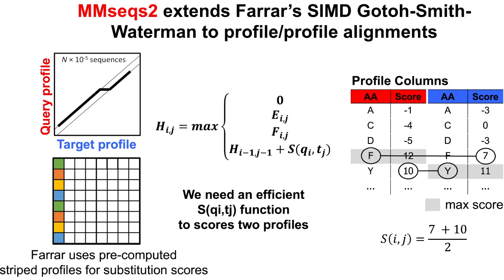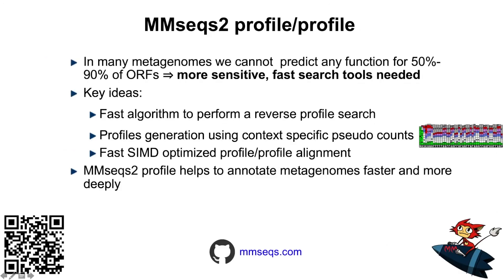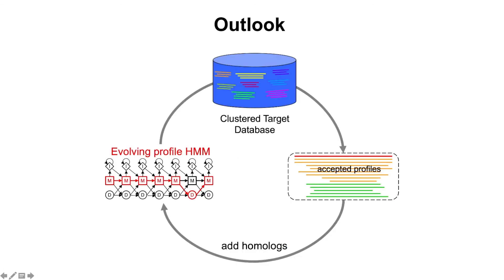To wrap up, MMSeqs2 Profile-Profile is a really sensitive tool that should help reduce the problem of annotating ORFs. Key ideas are a fast algorithm for reverse profile searches, context-specific pseudocounts integrated in a way that doesn't harm speed but still improves sensitivity, and a fast SIMD-optimized profile-profile alignment enabling iterative search. Looking ahead, we are trying to turn these profiles into real HMMs to further improve alignment quality and sensitivity.